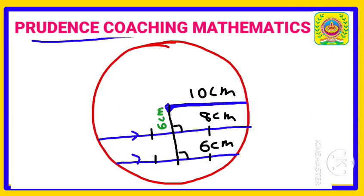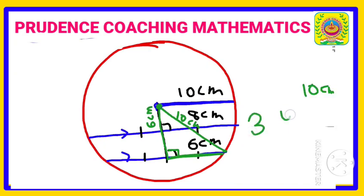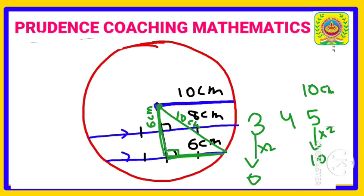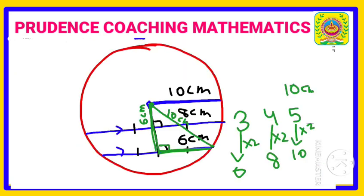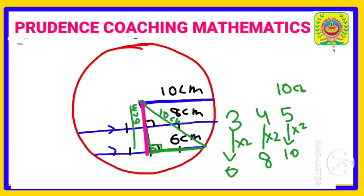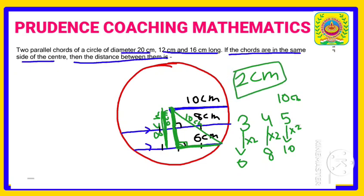Drawing a radius from the center to the circumference for the other chord gives 10 centimeters, and the half-chord is 6 centimeters. Using the same 3-4-5 triplet: the hypotenuse is 10 (5 × 2), the base is 6 (3 × 2), so the perpendicular distance is 4 × 2 = 8 centimeters. Subtracting the two distances: 8 centimeters minus 6 centimeters gives the distance between the two chords, which is 2 centimeters.